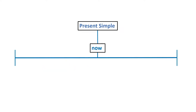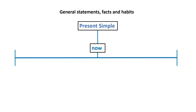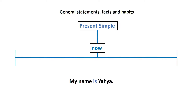Present simple, however, is a general statement, fact or habit. For example, I eat burgers every week. Or you can say, my name is Yahya. This is a fact.